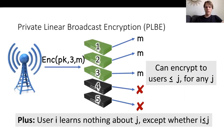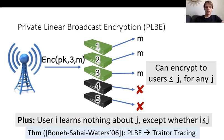Private linear broadcast encryption is a type of broadcast encryption where every user is given a number from one to N. When you encrypt, you can specify an index j. The encrypted broadcast can then be decrypted by any user whose identity is less than or equal to j. On the other hand, if your identity is greater than j, you cannot learn the message. The additional requirement is that the index j is hidden — a user i learns whether they decrypt or not, and therefore learns whether i ≤ j, but should learn nothing else about j. As proven by Boneh, Sahai, and Waters, if you have a private linear broadcast encryption, this implies a traitor tracing scheme with the same exact parameters.